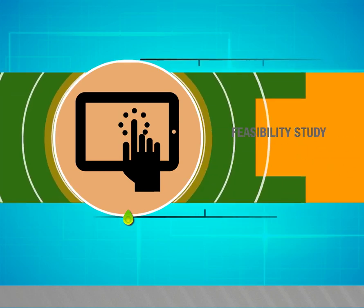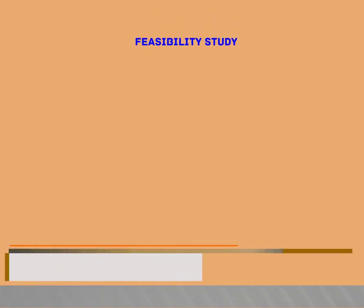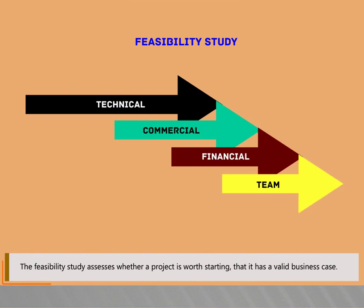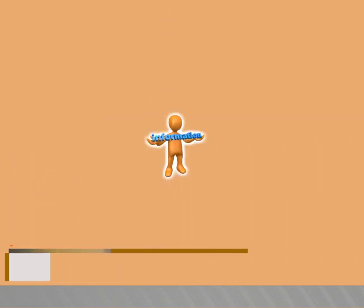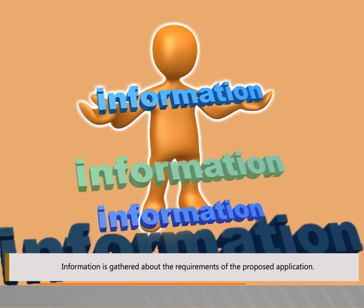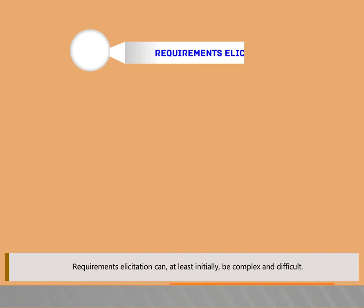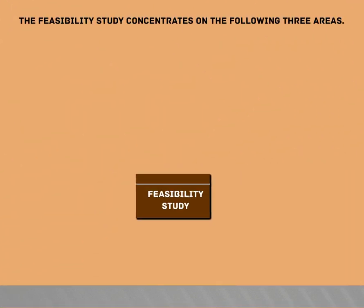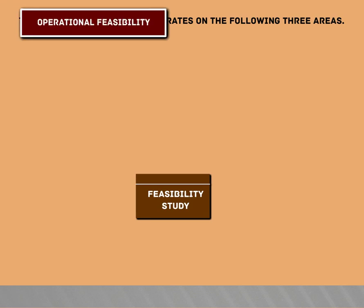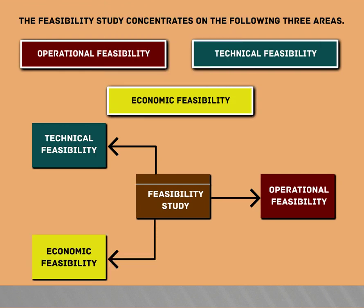The feasibility study assesses whether a project is worth starting — that it has a valid business case. Information is gathered about the requirements of the proposed application; requirements elicitation can at least initially be complex and difficult. The feasibility study concentrates on three areas: operational feasibility, technical feasibility, and economic feasibility.